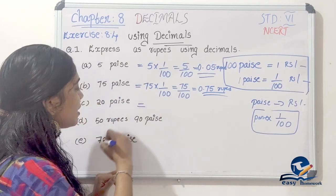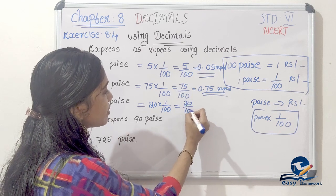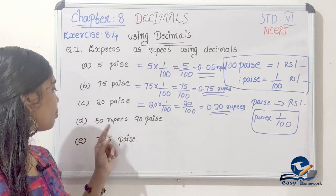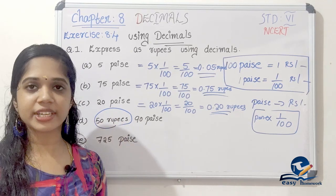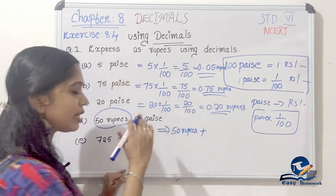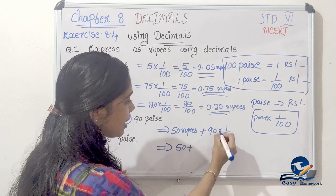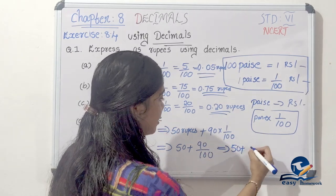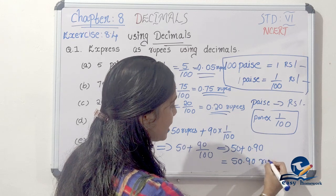Next question: 20 paise. 20 into 1 by 100 equals 0.20 rupees. Next: 50 rupees plus 90 paise. That gives us 50.90 rupees.